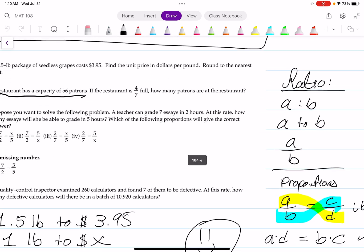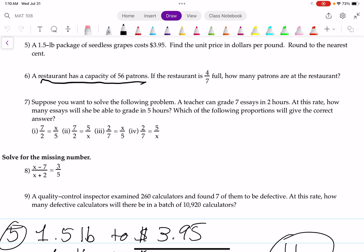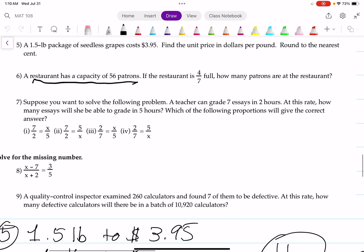For number 7, I'm going to do the work up here. Suppose you want to solve the following problem. A teacher can grade 7 essays in 2 hours. At this rate, how many essays will she be able to grade in 5 hours? Which of the following proportions will give the correct answer?